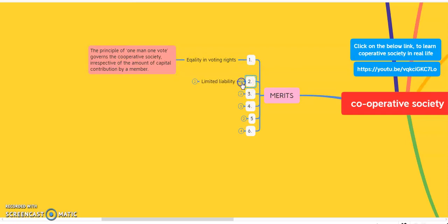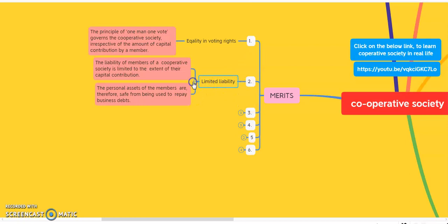The second merit is limited liability. The liability of members is limited to the extent of their capital contribution. Personal assets of the members are therefore safe from being used to repay business debt. The member of the cooperative society is liable only for the amount contributed by them, not for the total loss, and personal assets are not used to repay the business debt.